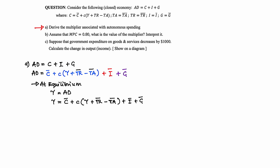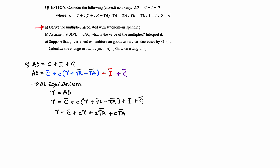Next, we expand the bracket on the right. So we have Y equals autonomous consumption plus MPC times Y, giving us CY, plus MPC times autonomous transfer payment, giving us C·TR-bar, plus MPC times autonomous tax, giving us C·T-bar, then plus autonomous investment plus autonomous government spending.